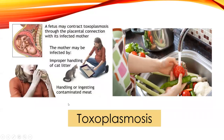Toxoplasmosis typically comes from cats and cat litter, so women are recommended not to change the litter box during pregnancy. They also want to avoid contaminated meat by ensuring everything is cooked thoroughly and washing fruits and vegetables, especially from the farmer's market. Women are more susceptible to infections during pregnancy because their immune system is slightly suppressed, so they need to be super careful about what they're eating.